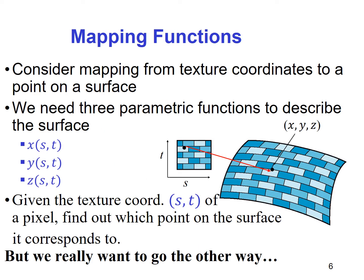We need mapping functions to go from one coordinate to the other. Consider a mapping function from texture coordinates to the point on a surface. We need three parametric functions to describe the surface: X as a function of S and T, Y as a function of S and T, and Z as a function of S and T.